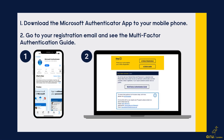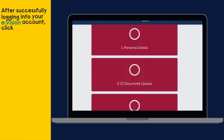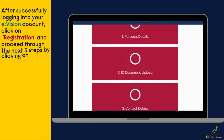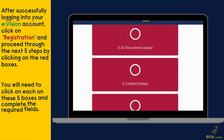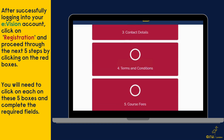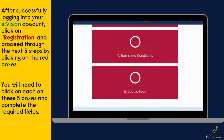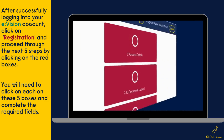Then, go to your registration email and see the multi-factor authentication guide. After successfully logging in to your eVision account, click on registration and proceed through the next five steps by clicking on the red boxes. You will need to click on each of these five boxes and complete the required fields.